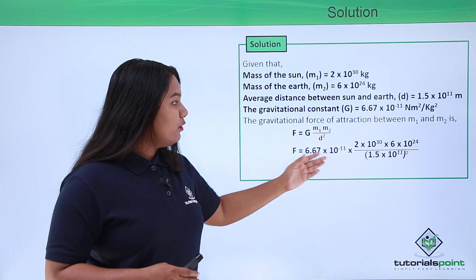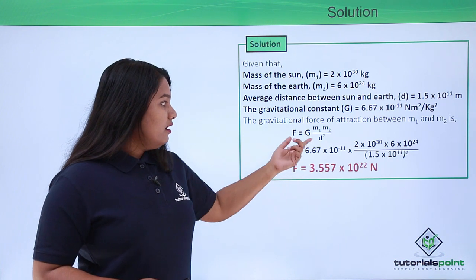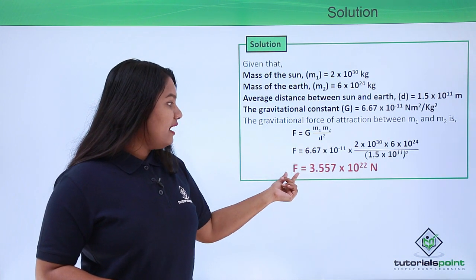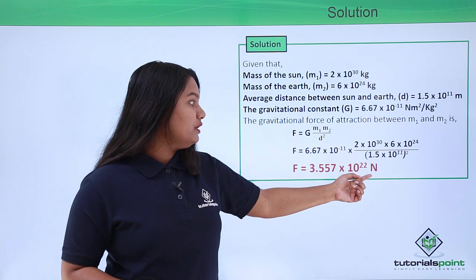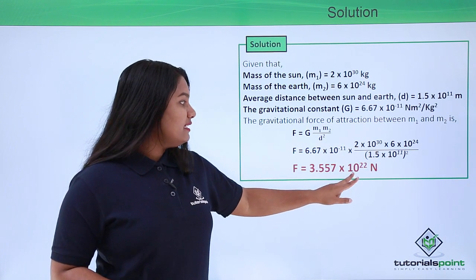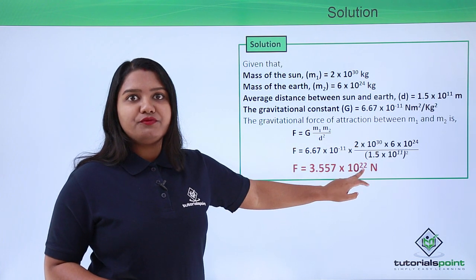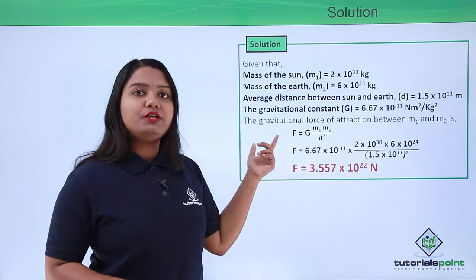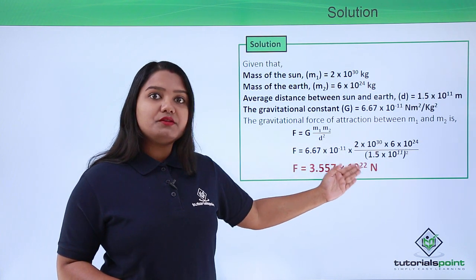These are all the values substituted into this expression, and on calculating this we find the force to be 3.557 × 10^22 N. Now here we see that the power of 10 is 22 - it's such a huge force, 3.557 × 10^22 newtons.